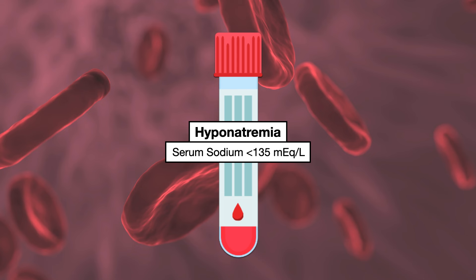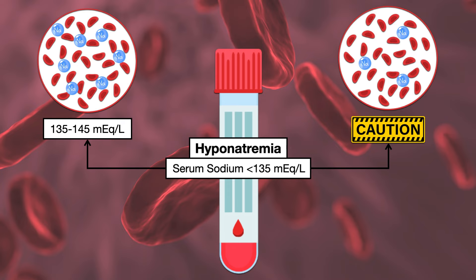Hyponatremia is defined as a serum sodium level of less than 135 milliequivalents per liter. This means that compared to the body's desired sodium concentration in the blood, the actual sodium concentration is lower.